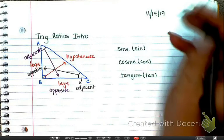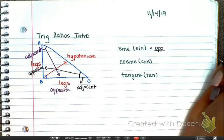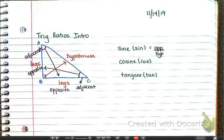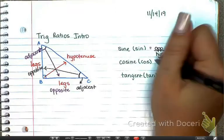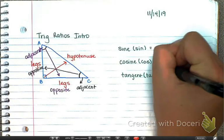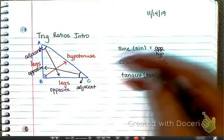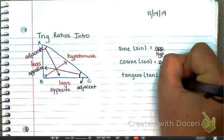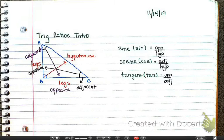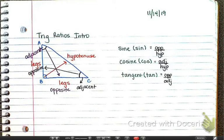When we're looking for sine, we use the opposite side over the hypotenuse. Cosine is adjacent over hypotenuse. And tangent is opposite over adjacent. Sine is opposite over hypotenuse, cosine is adjacent over hypotenuse, tangent is opposite over adjacent — that's a little harder to memorize on its own.